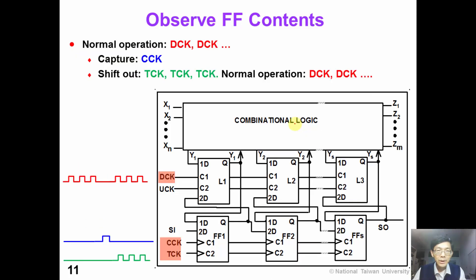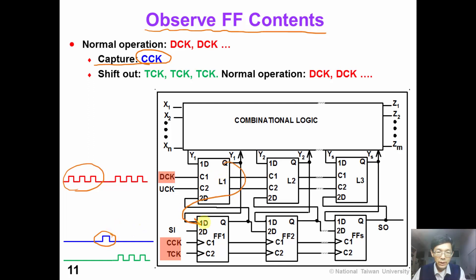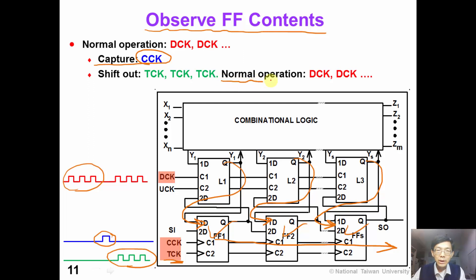Let's explain how it works. Suppose we want to observe the flip-flop contents in the circuit. First, we perform normal operation using DCK. Then, in the middle of normal operation, we stop the circuit and pulse the capture clock CCK, so we can capture the contents of the flip-flop into our shadow scan chain. We then shift out the shadow scan chain using TCK. At the same time, we can continue normal operation using data clock DCK, allowing us to observe the flip-flop contents without interference.